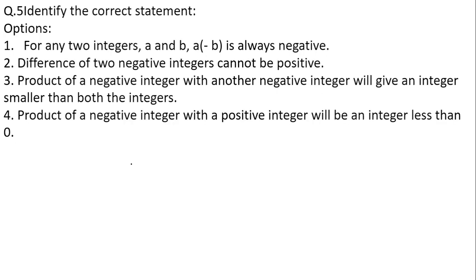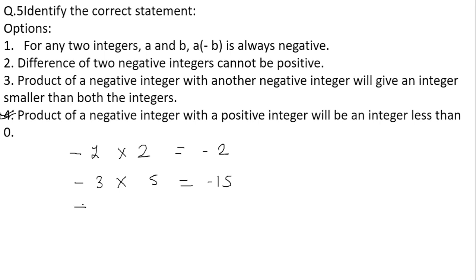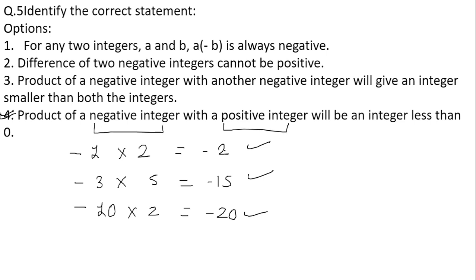Moving to the next question: identify the correct statement. The correct answer is option number 4 directly — the product of a negative integer with a positive integer will be an integer less than zero. For example, −1 × 2 = −2, −3 × 5 = −15, −10 × 2 = −20. All products obtained from multiplying a negative integer by a positive integer are less than zero. Hence this is the correct statement.